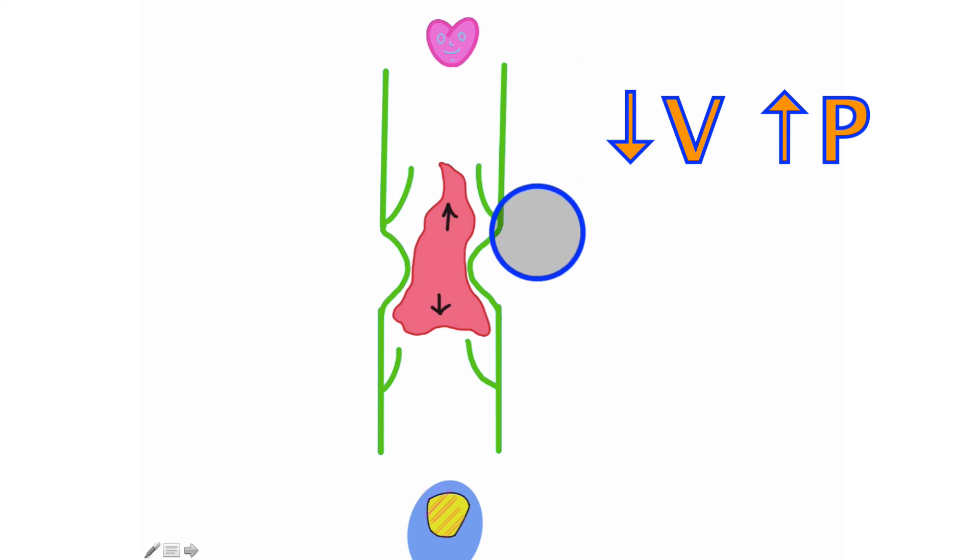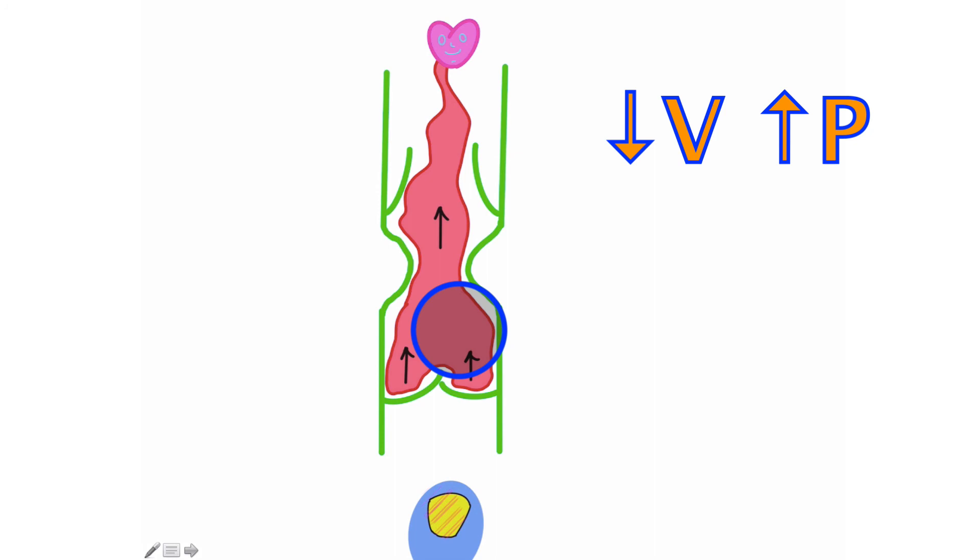So, theoretically, that blood could flow superiorly or inferiorly. But fortunately, there's these valves right here that when blood attempts to flow inferiorly, those valves are going to close and blood can only move superiorly.